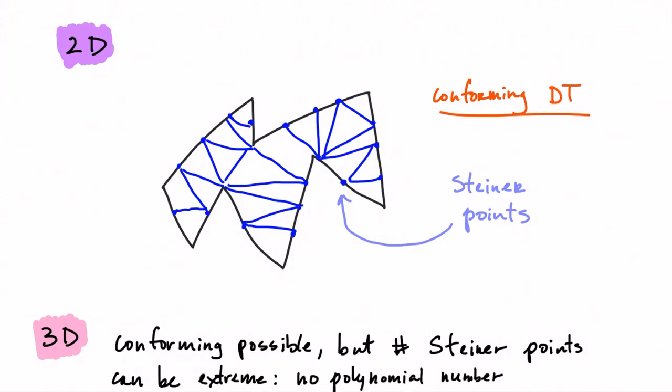So in theory, there could be n to a power of 3 or n to a power of 4 extra vertices that are inserted.